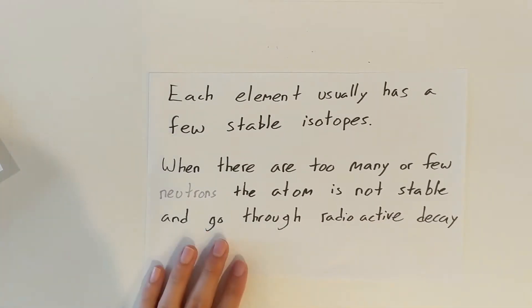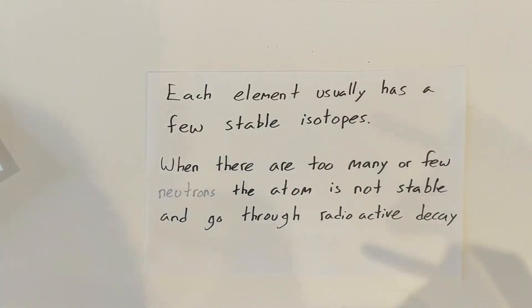So we just talked about isotopes. Each element usually has a few stable isotopes, meaning that they can have a couple different amounts of neutrons and still be stable.